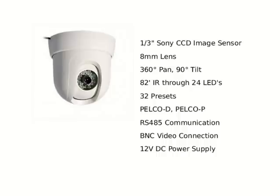The camera features a third inch Sony CCD image sensor and views images through an 8mm lens. With a full 360 degree pan and 90 degree tilt, along with an 80 foot IR distance using 24 LEDs, the camera has the capability to capture everything in its vicinity. The camera is capable of 32 presets and supports both PELCO-D and PELCO-P with RS-485 communication. The camera uses standard 12 volt DC power connections and BNC video connections.